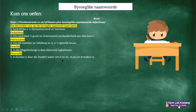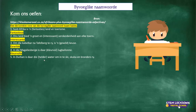'In Durban is daar die helder water om in te ski, scuba en branderplank.' In Durban there is very clear water. This is something that you have to think about — ends on a short vowel followed by a consonant. Think of your superlative form then. 'Helderste' — thank you, Tabile. Joeg, jy is op en wakker so vroeg in die môre! Well done.